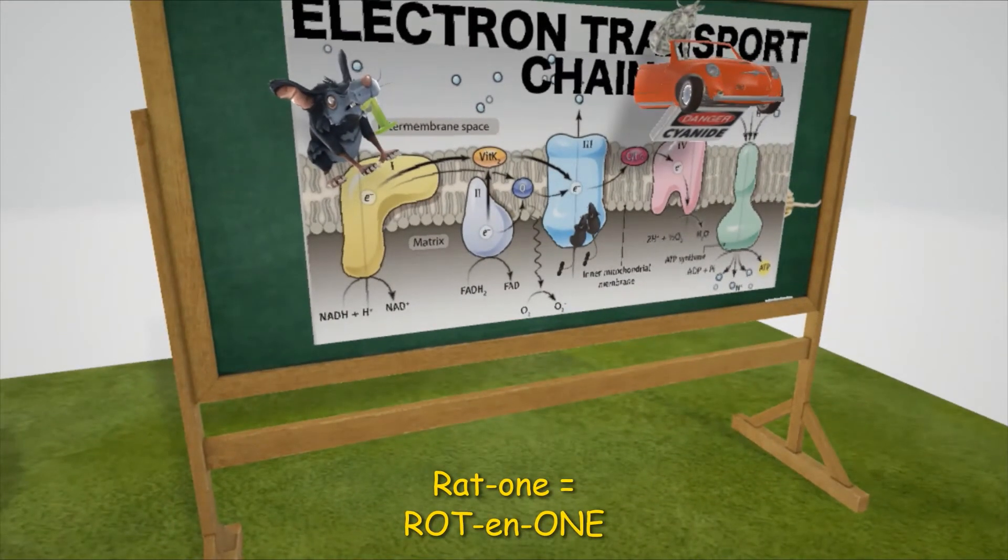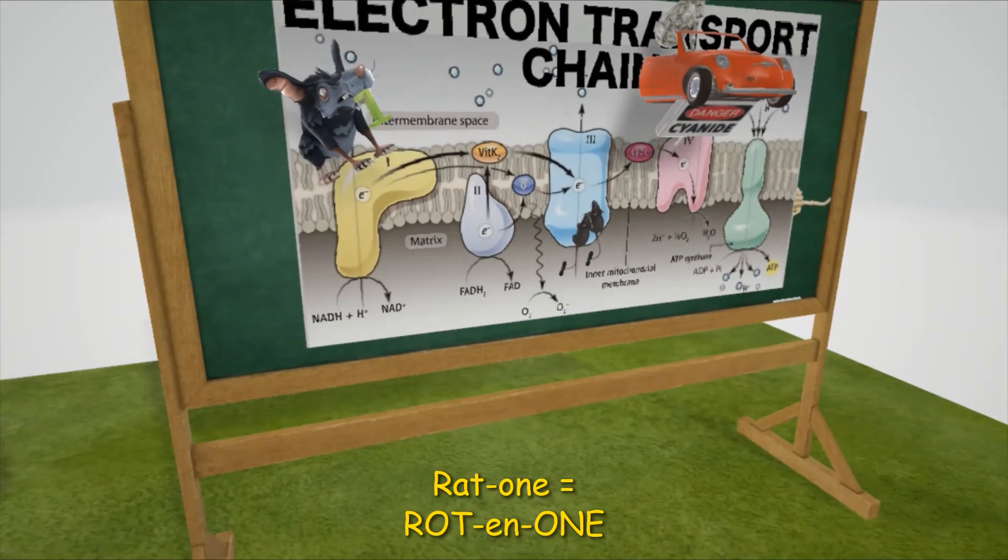Here's complex 1 with this rat over here and a 1 in his mouth. RAT1 for rotenone. Rotenone inhibits complex 1.